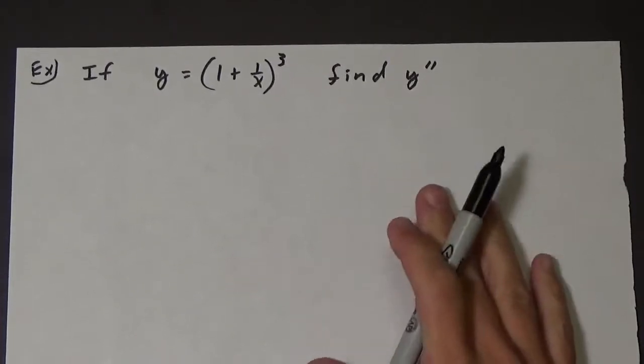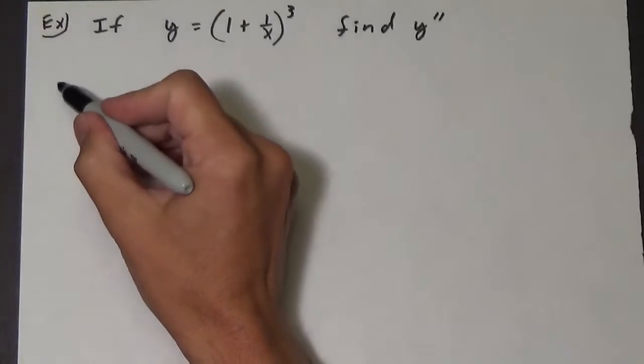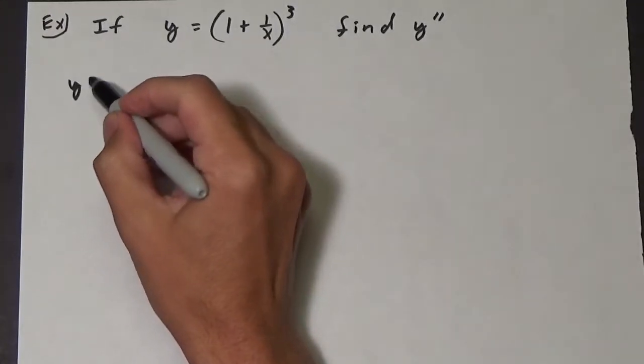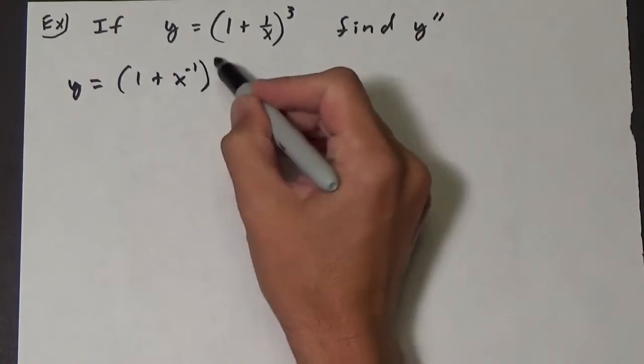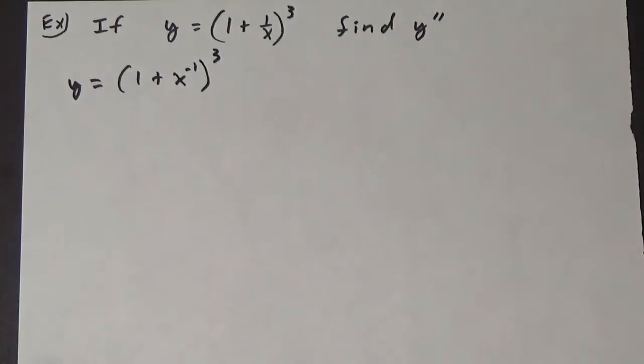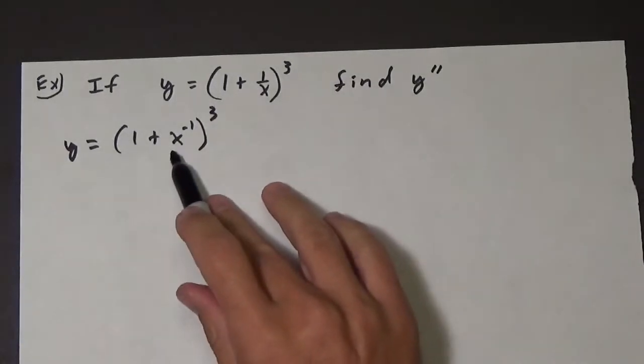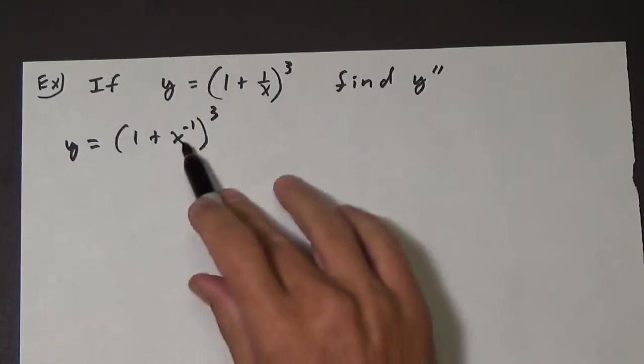Alright, so let's see if we can go through this. First I'm going to rewrite it: y equals 1 plus x to the negative 1 cubed. So we do have a composite function. We have this 1 plus x to the negative 1 inside the cube.